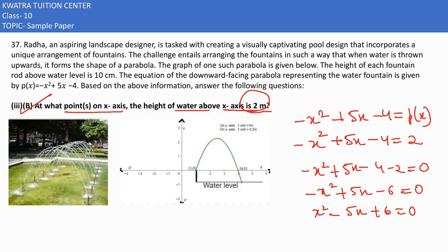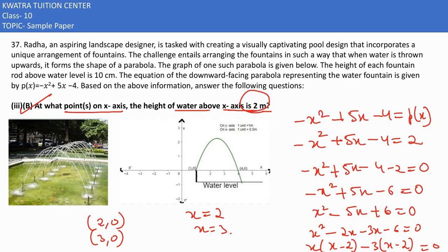x² - 5x + 6 can be factored as (x - 2)(x - 3) = 0. So x = 2 and x = 3. Therefore, the required points are (2, 0) and (3, 0).